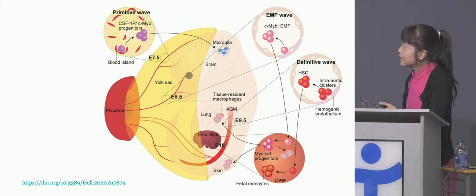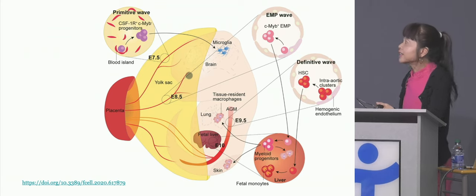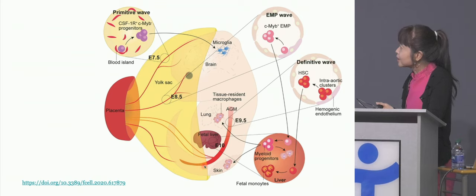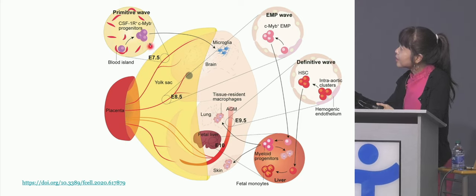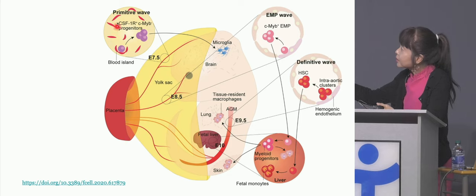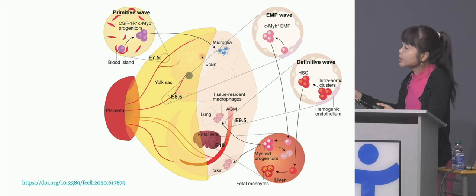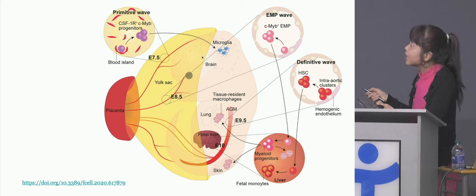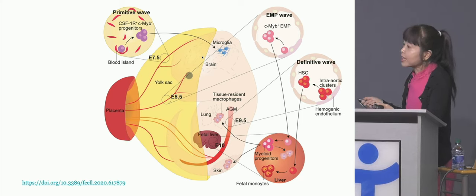It turns out that some macrophages, instead of originating from the bone marrow, have a different origin — from the yolk sac. As the embryo is developing, the yolk sac, which supports the embryo in the early part of development, forms primitive progenitor cells that — in mouse models — seed the part of the embryo that develops into the brain, into the central nervous system, very early in development. Those specific immune cells become what we call the tissue-resident cells in the central nervous system — we call those specifically microglia.